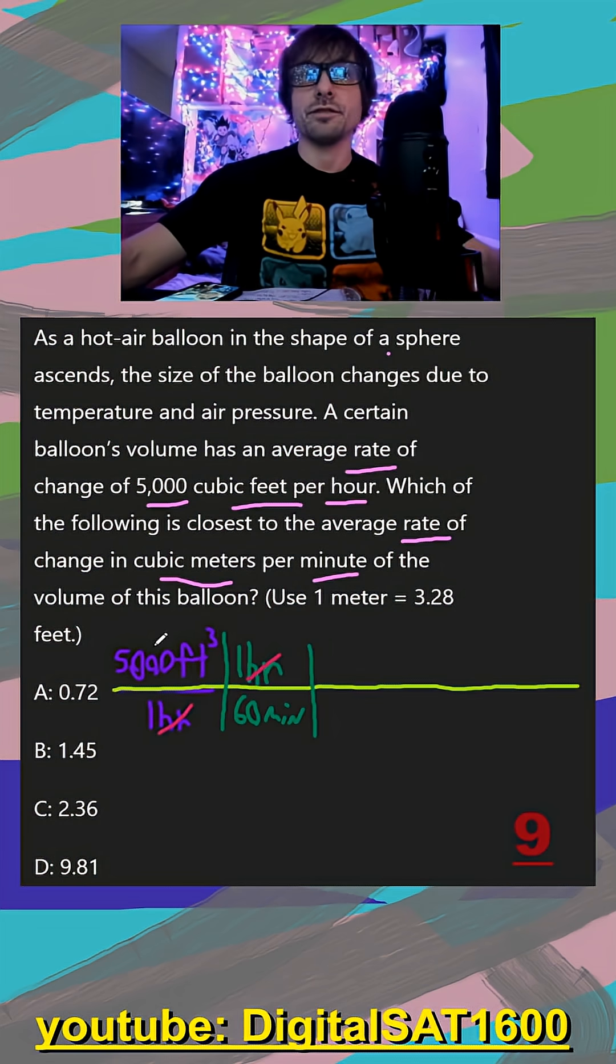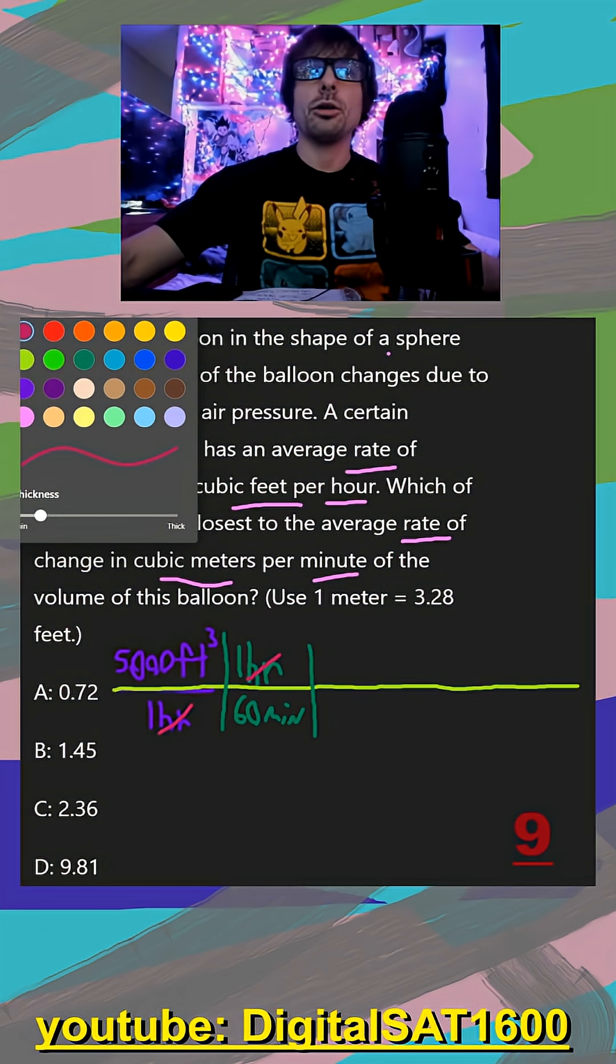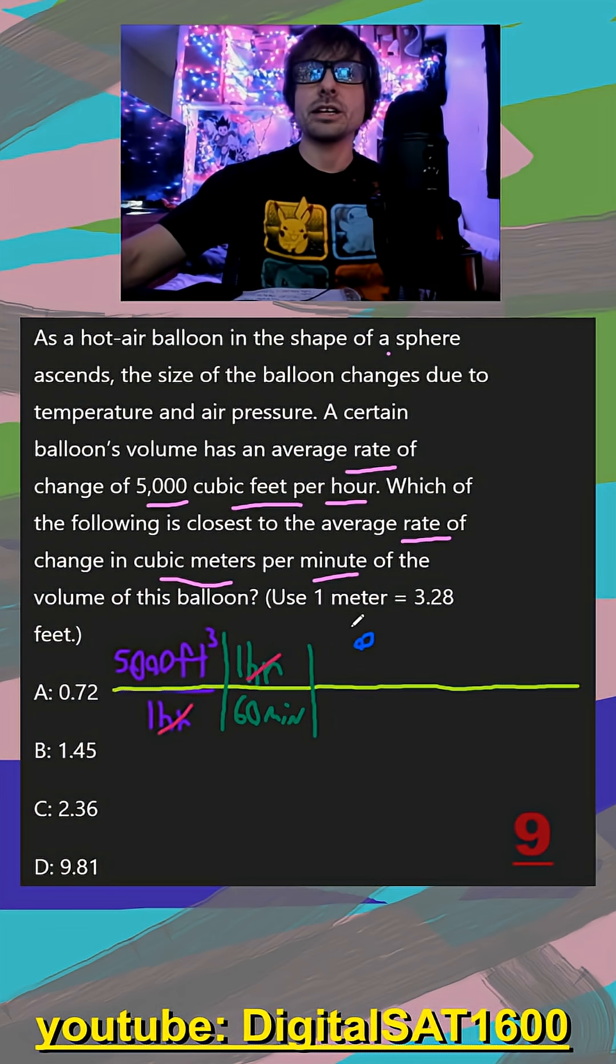And of course, to calculate my new rate, I would do 5,000 divided by 60, because this is just one big fraction. But now the harder part, we got to do the feet into meters.